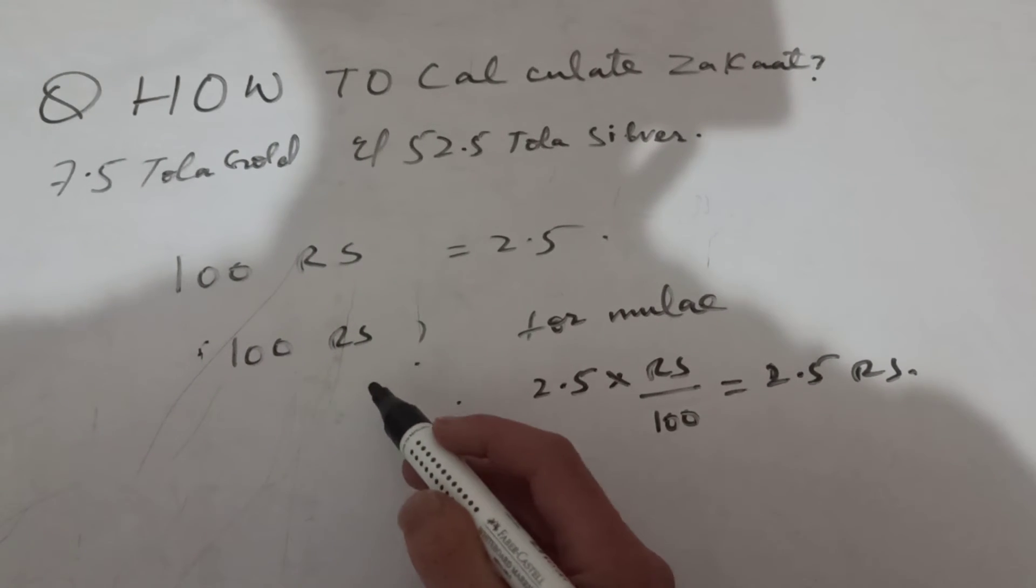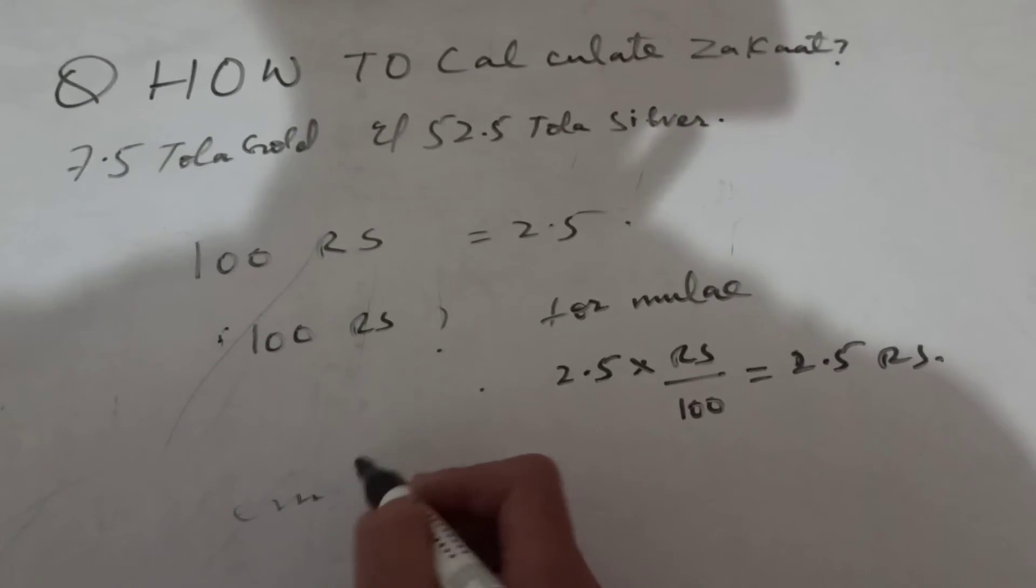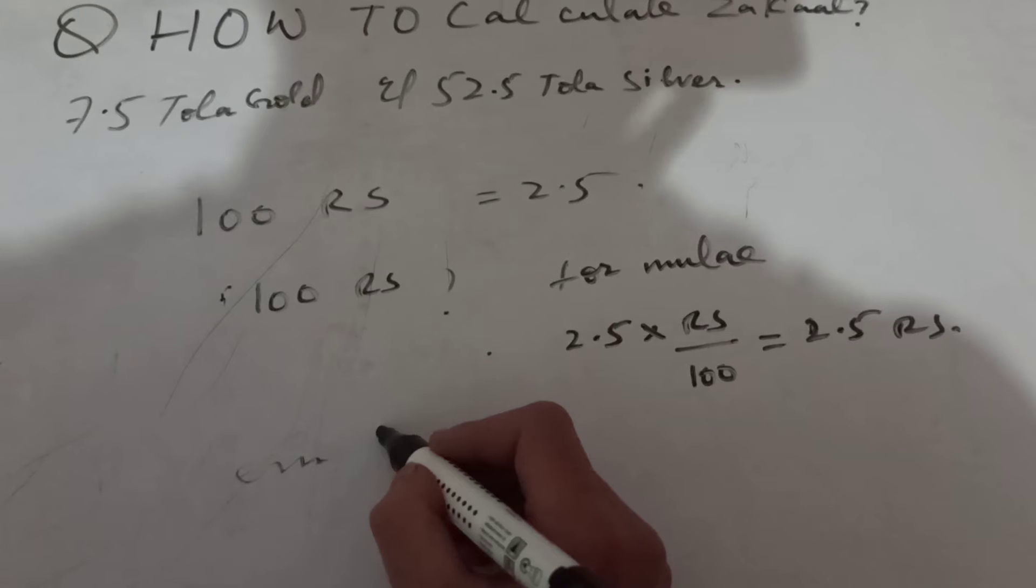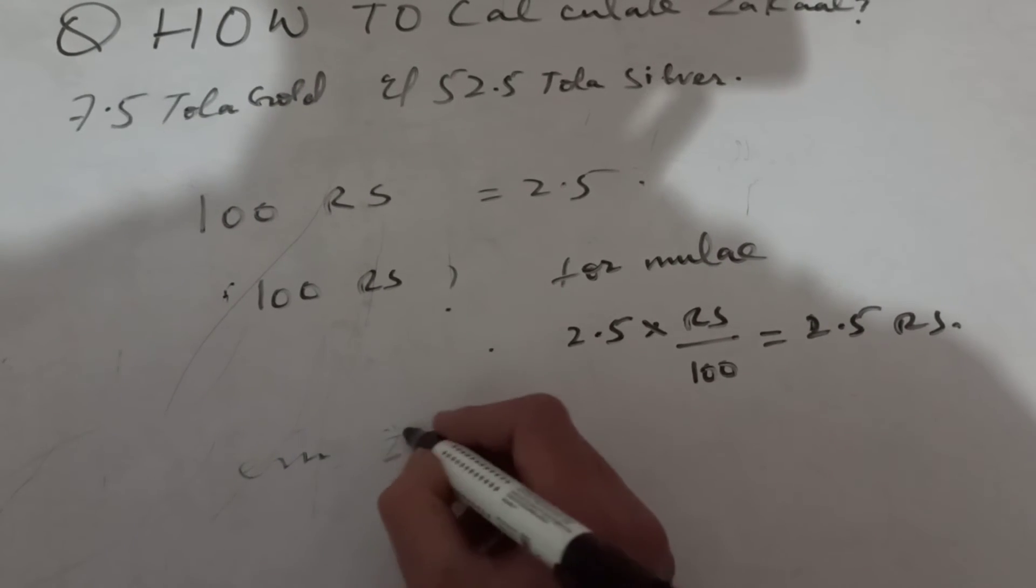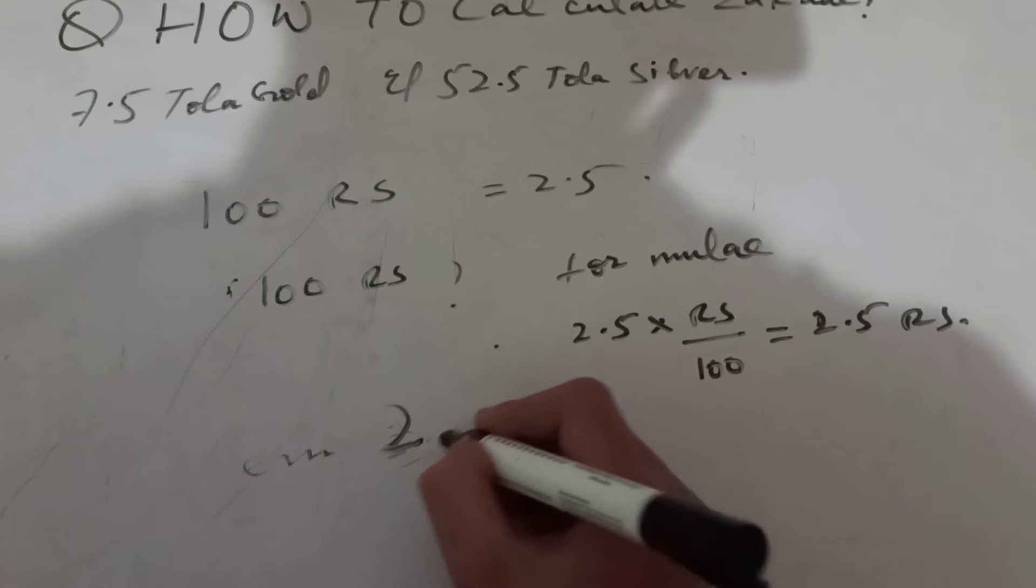That's correct. That means it's the correct formula. Now, we will use this for much bigger amount. For example, we have 2 lakh rupees. And we have to calculate zakat for 2 lakh rupees.